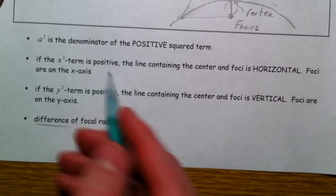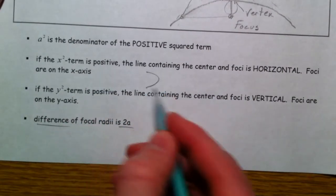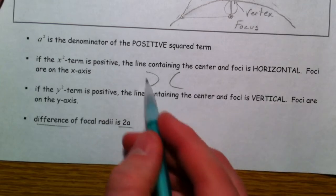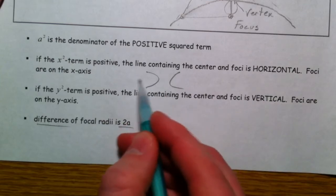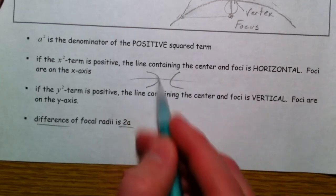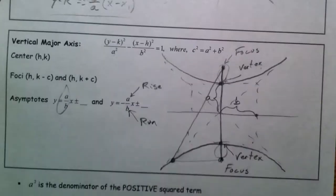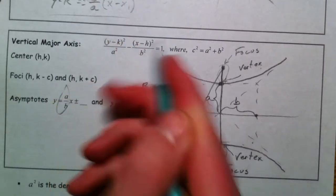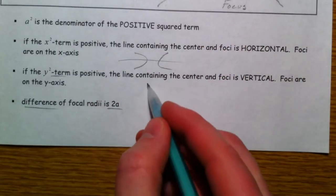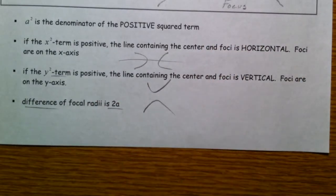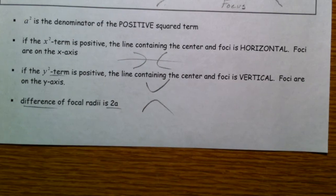So if the x squared is positive, the line containing the center and the foci is horizontal, so it opens left to right, like this. If the y squared is positive — if it's y squared minus x squared — it's going to open up and down. So there you have it. Let's work on some more problems.